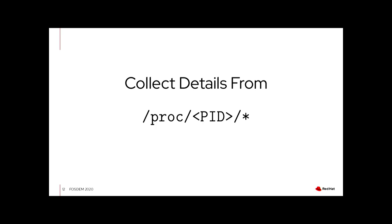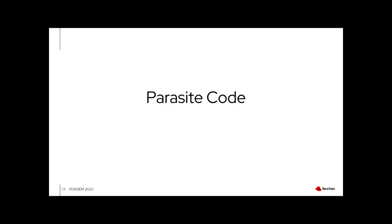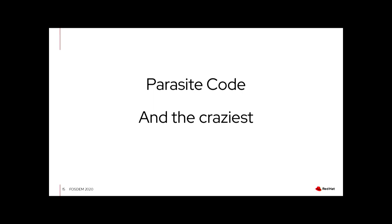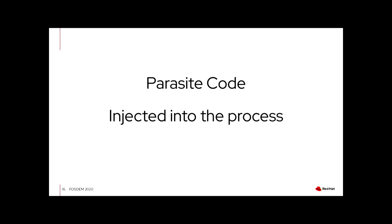Once CRIU has collected all the information from the proc filesystem, there's the next step called the parasite code. This is probably my most favorite part of CRIU because it's also the craziest if you go into the details — you wouldn't expect something like this when you start looking at a project like this. The parasite code is injected into the running process.